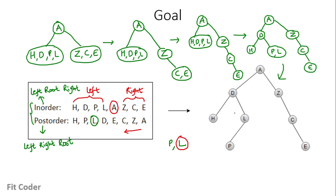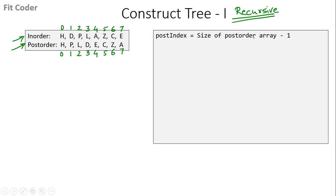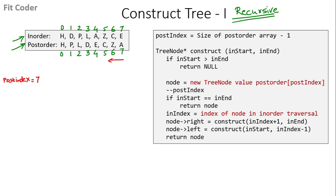This can be done both recursively and iteratively. Here we will focus on the recursive approach. So now let's have a look at the pseudocode. We are given the two traversals — inorder and postorder — along with their indices. The first step is to keep a variable postIndex which will be equal to the size of the postorder array minus one. Since the size of this array is 8, postIndex is 7. postIndex will be used to traverse the postorder array from reverse, so it initially points to the last element, which is A. Then we have the function construct which takes two parameters: inStart and inEnd — the indices for the inorder traversal. The first call will be construct(0, 7).